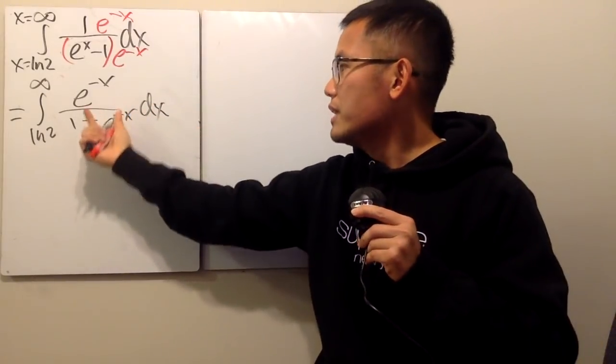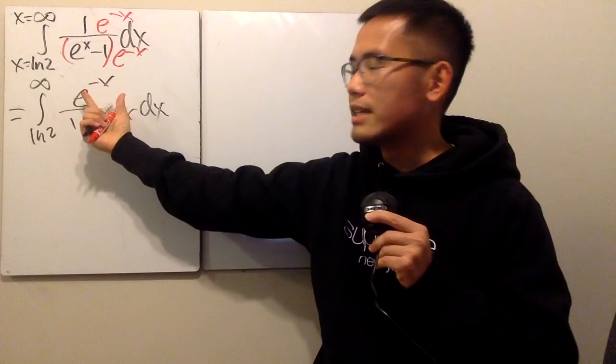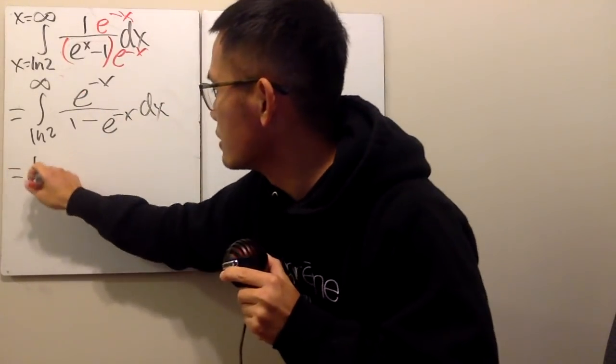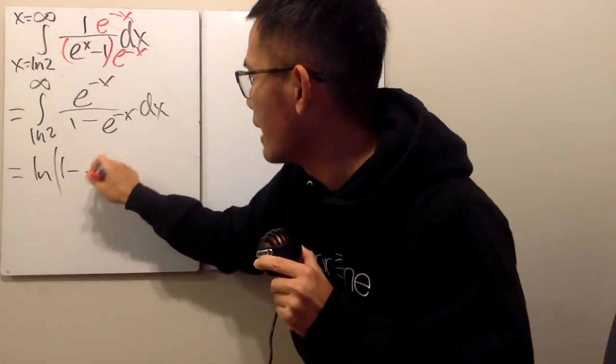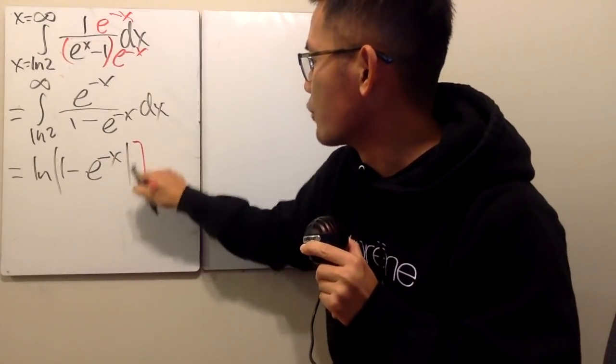And as you can see, the derivative of the bottom is precisely the top. So what that means is that this right here is just ln absolute value of the bottom, which is 1 minus e to the negative x like this.